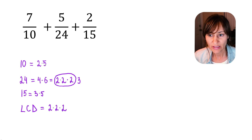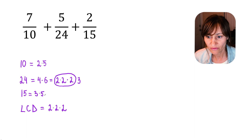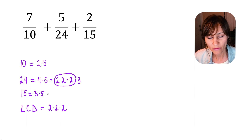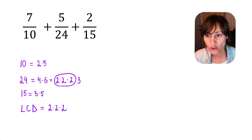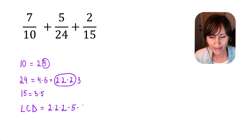The next number is 5. 5 shows up in 10 one time. In 24, 5 shows up zero times. In 15, 5 shows up one time. So the most number of times 5 shows up in any number is one time. We can either circle 5 in 10 or 5 in 15 — it doesn't matter. So in the LCD, we will have 5 showing up one time.